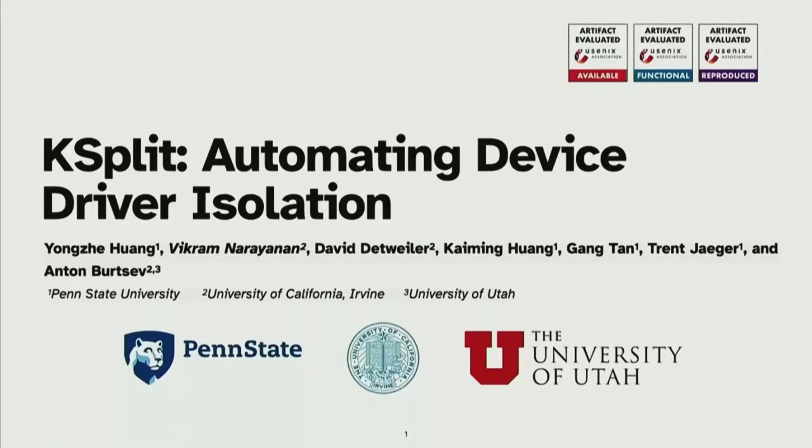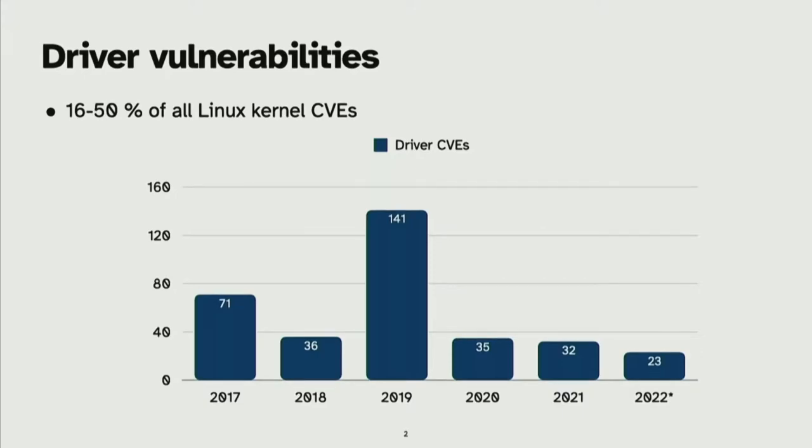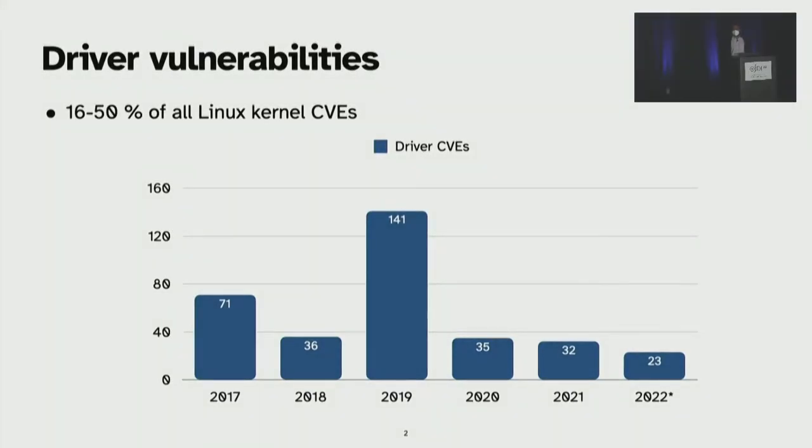This is a joint work between Penn State University, University of California at Irvine, and University of Utah. The key insight from analyzing all the Linux kernel vulnerabilities from the CVE database is that 16 to 50 percent of all the kernel CVEs are from device driver subsystem. This is the data for the past five years.